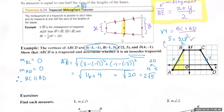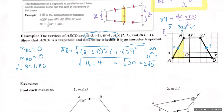You break 20 apart as 2, 2, and 5. If a two has a partner, it can leave the radical — one dies in the process — and the five stays inside because it doesn't have a partner. So 2 square root of 5 is the answer for AB. Now go ahead and independently do the distance formula for CD and check your work.